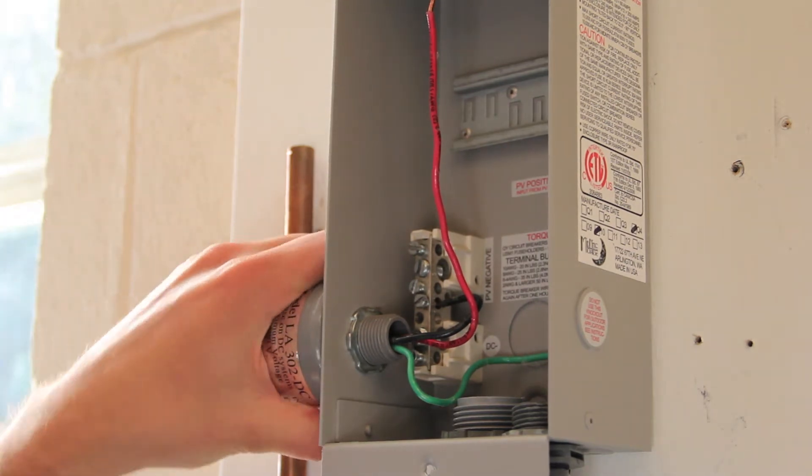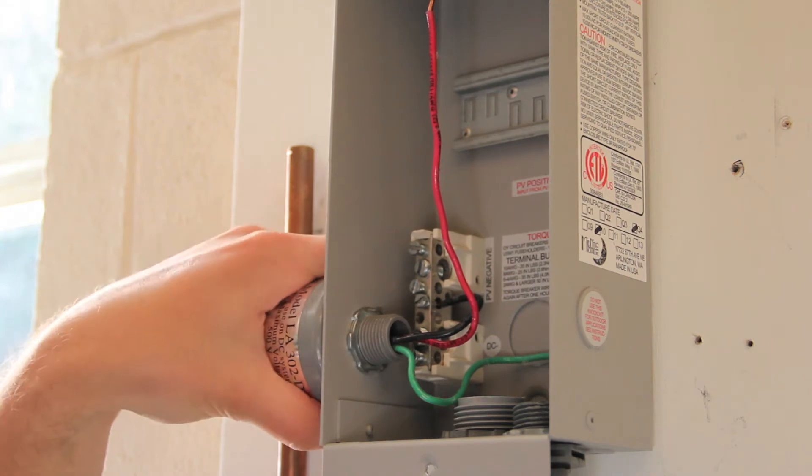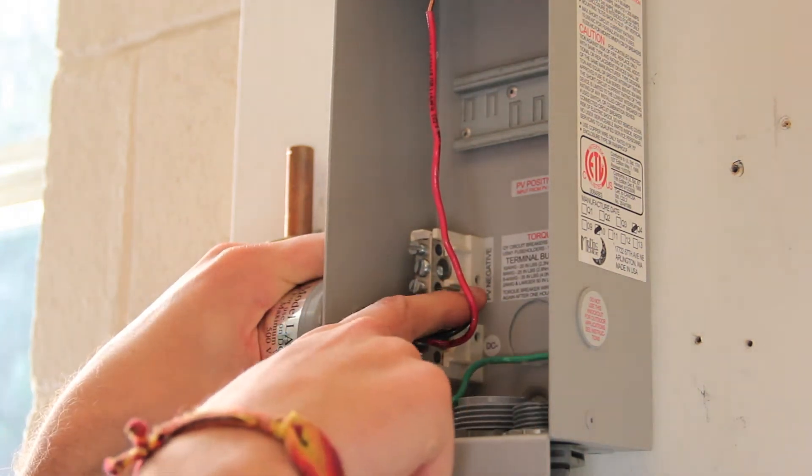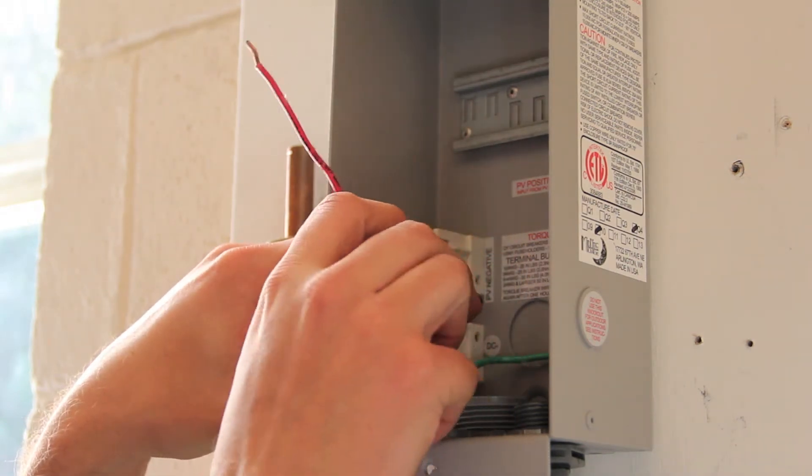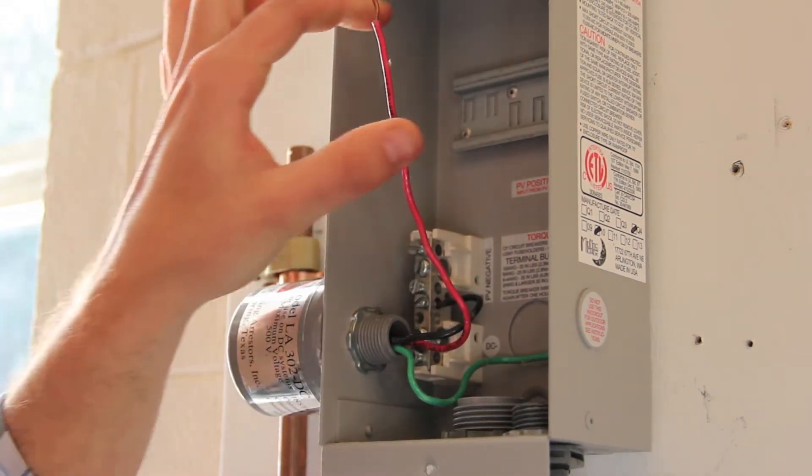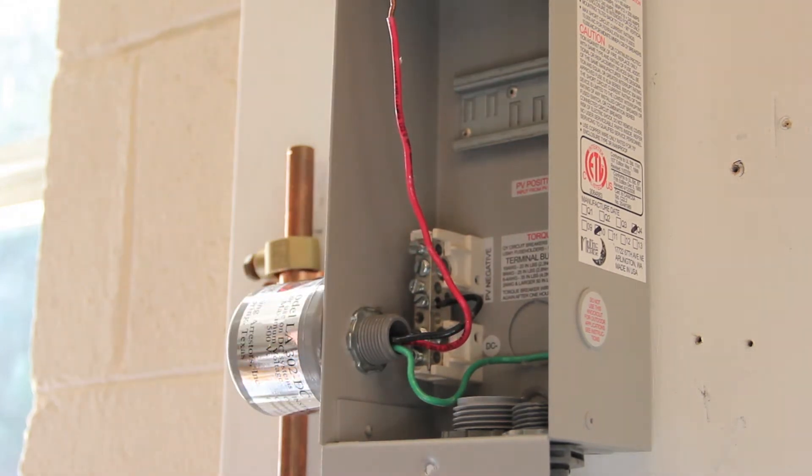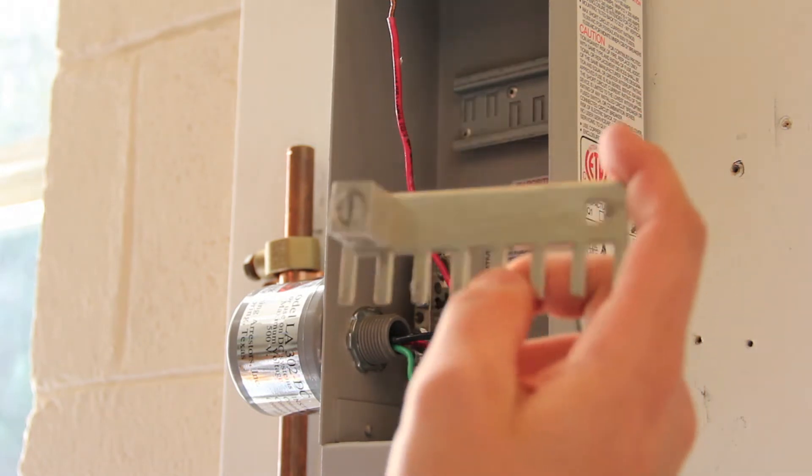I'm going to start wiring it up. I've already put a lightning arrester in this combiner box and landed the ground on the ground bus bar, the negative on the negative bus bar, and we still have our positive free here, which will be combined with two breakers here. One breaker for each photovoltaic string and a breaker combiner rail.